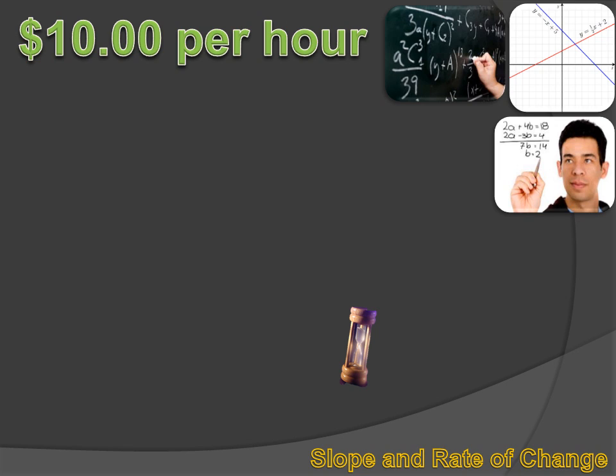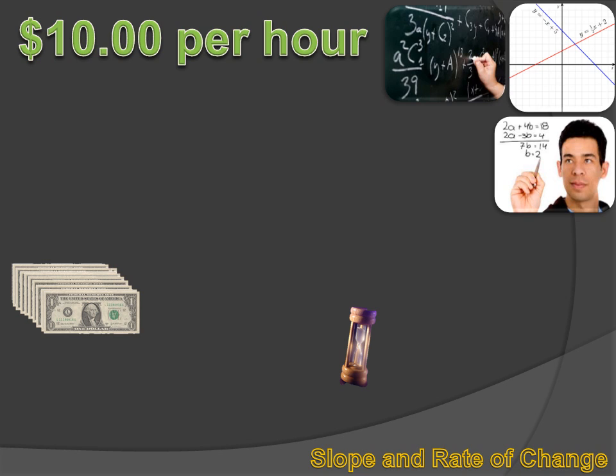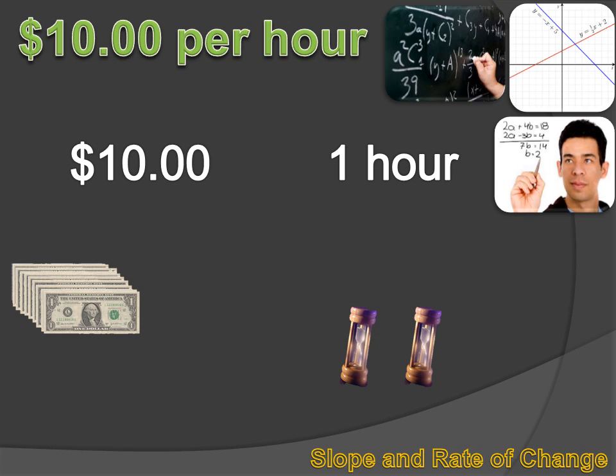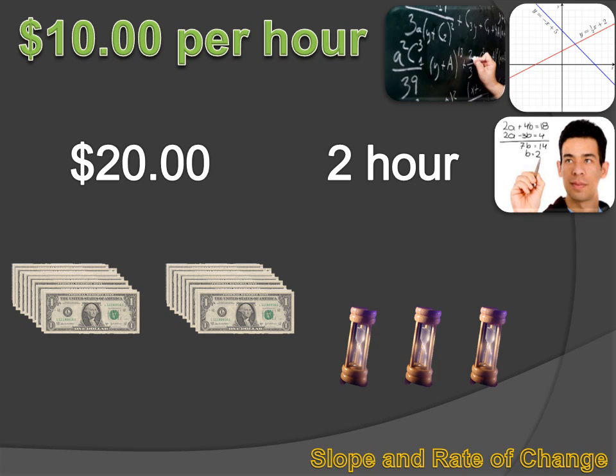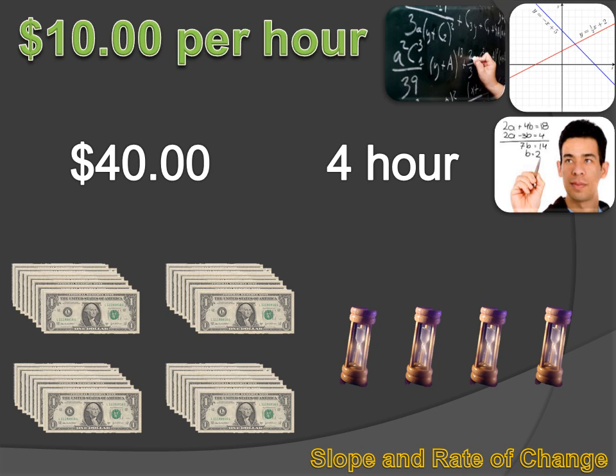For instance, if you work for one hour, you've got $10. But let's say you increase that to two hours. Now you've got two times $10, or $20. Or three hours results in $30. Four hours results in $40. Each time the hours increased by one, the dollars increased by ten.